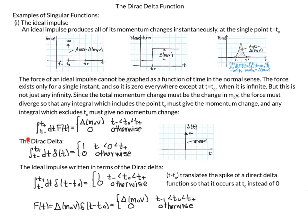The Dirac Delta by itself is not that interesting, but in an integral it becomes more useful. The ideal impulse written in terms of the Dirac Delta is: the integral from T-minus to T-plus of delta(T minus T-naught) dt, which equals one as long as T-naught is in our interval and zero otherwise. T minus T-naught just translates the spike so it occurs at T-naught instead of zero. Our ideal impulse force equals delta(M0 V) times delta(T minus T-naught).